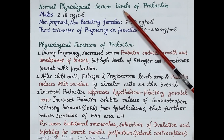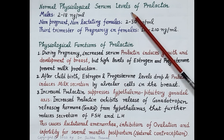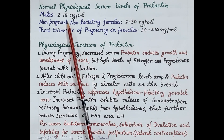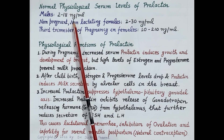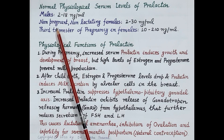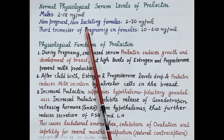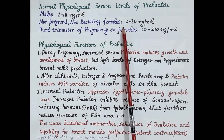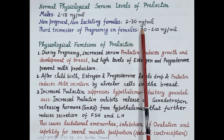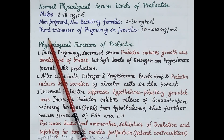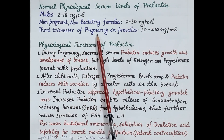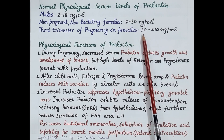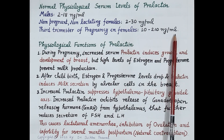Now let us see the normal physiological serum levels of prolactin, that is levels of prolactin in the blood. In males, serum prolactin levels range from 2 to 18 nanogram per ml. In non-pregnant and non-lactating females, prolactin levels range from 2 to 30 nanogram per ml. In females during the third trimester of pregnancy, serum prolactin levels rise and range from 10 to 210 nanogram per ml.